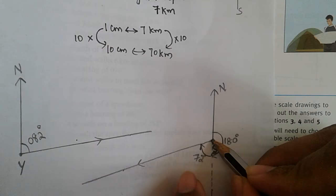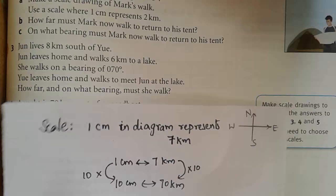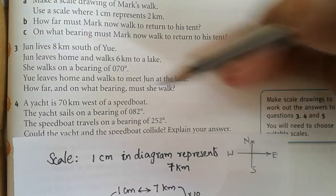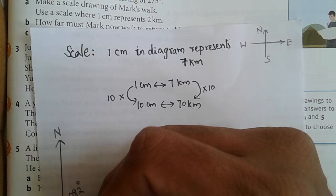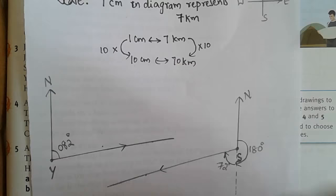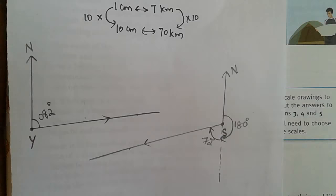It is given that the yacht sails on a bearing of 82 degrees. So from this point, considering it as location of yacht, draw north.